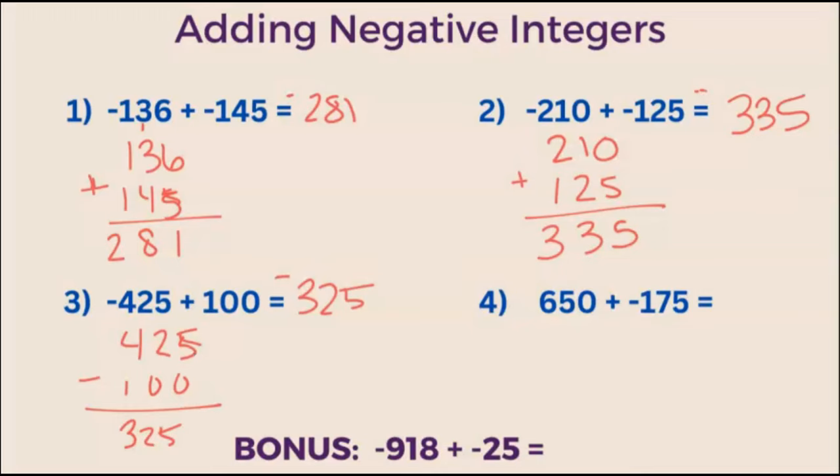Let's do one more like that. Following the same steps we had in example 3. What is 650 plus negative 175? Well, we're going to subtract them as if they were both positive. 650 minus 175.